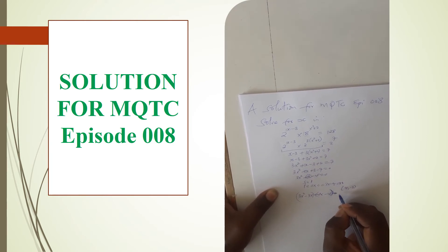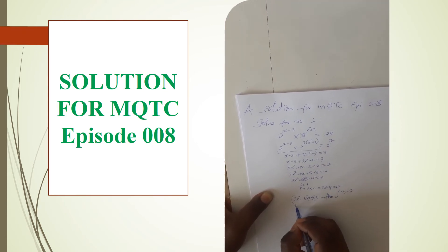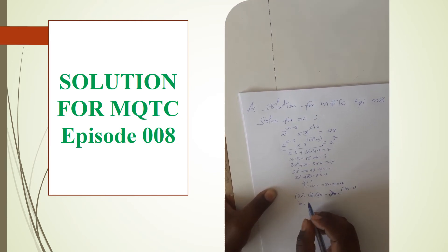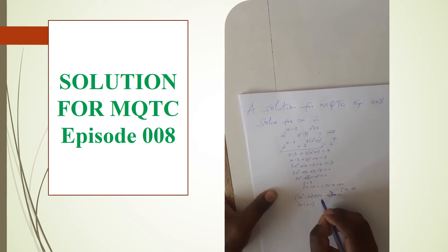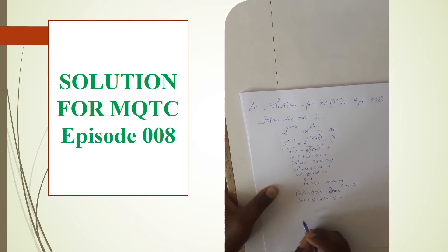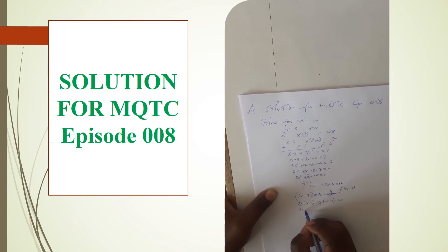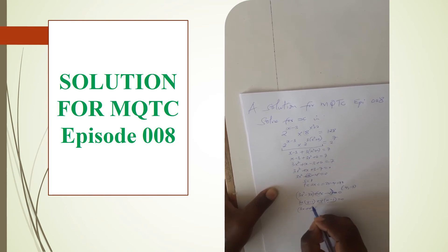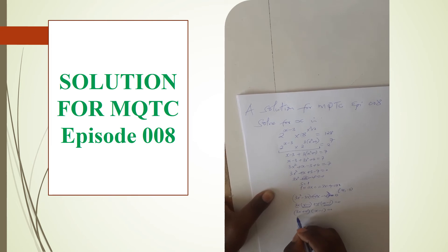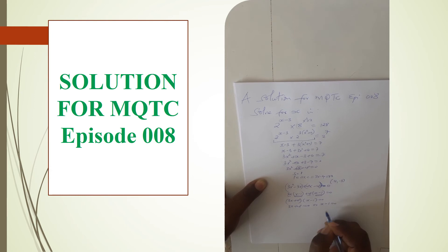We group the two pairs of terms by introducing brackets, then look for the common factor. From the first pair, 3x is common, giving 3x(x minus 1). From the second pair, 4 is common, giving 4(x minus 1) equals 0. Since (x minus 1) appears in both, we have: (3x + 4)(x minus 1) equals 0.